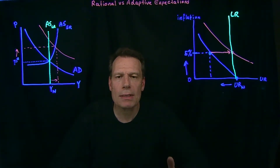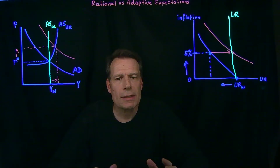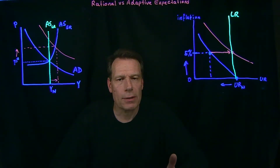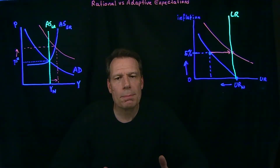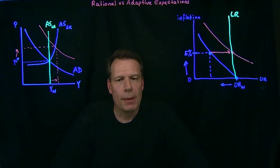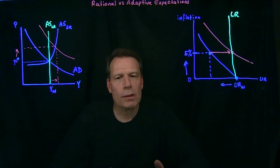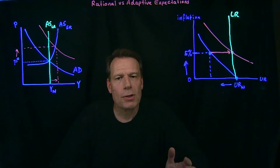Just as the graph on the right says that expansionary policy can result in a temporary reduction in unemployment, but at the cost of being stuck with a higher level of inflation in the long run. So in both cases, we see that the cost of using expansionary policy to go beyond the natural level in the economy is a higher rate of inflation. Both graphs rely on some assumptions about how quickly expectations about inflation change. So imagine being a worker: you've received a higher nominal wage, and then you see prices rising.